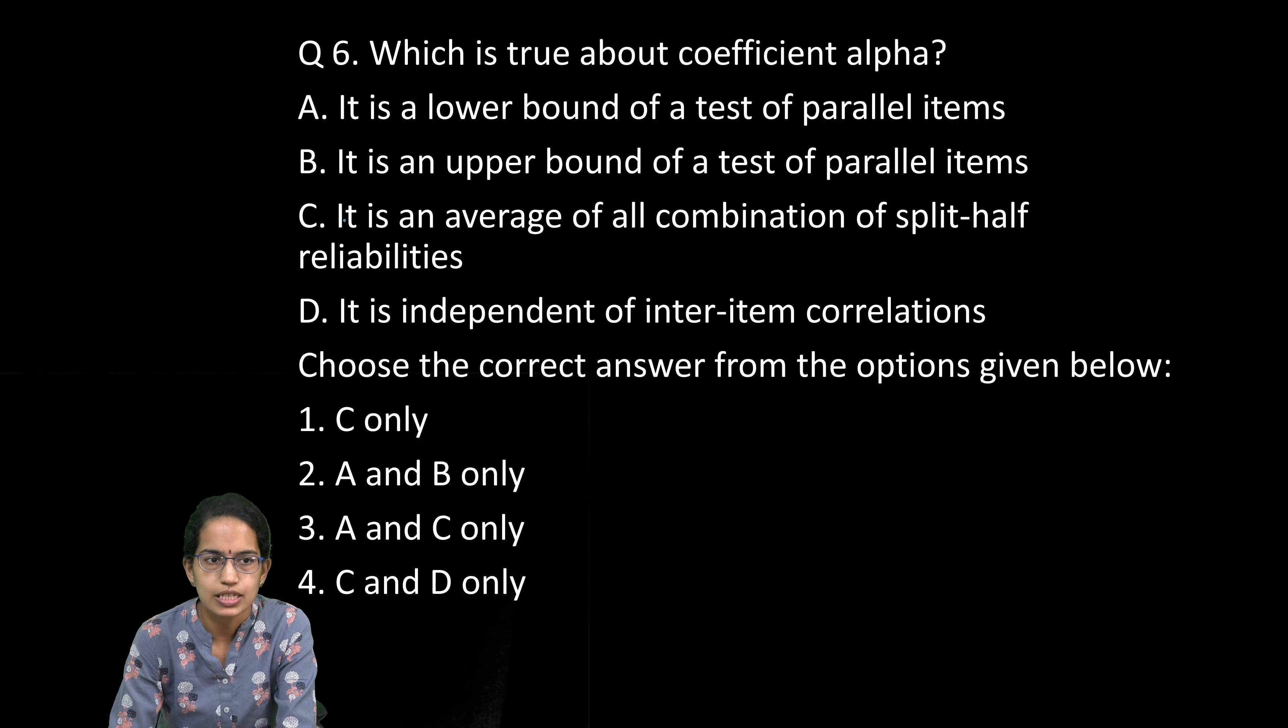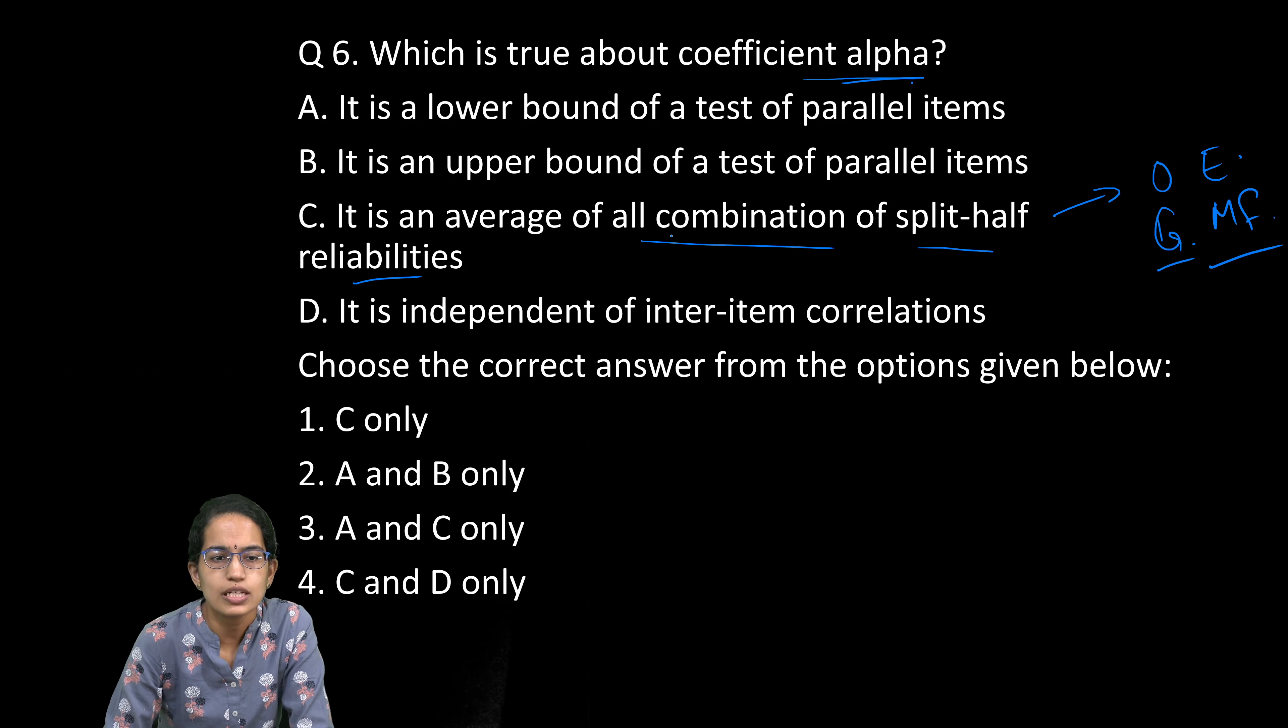Now this question from research and statistics: what is true about coefficient alpha? As discussed in our lectures, coefficient alpha is the average of all split-half. What are these split-halves? It can be odd-even, based on gender, male-female, or any other criteria—an average of all combinations of split-half reliability. It is definitely the lower bound test of reliability.